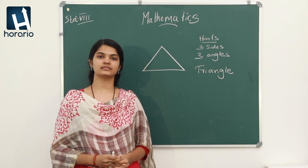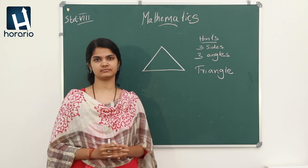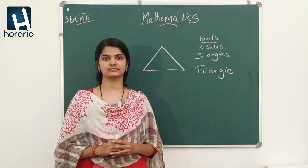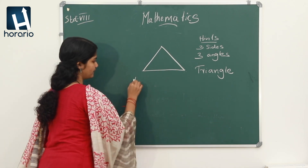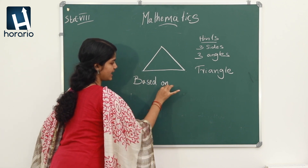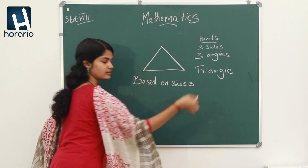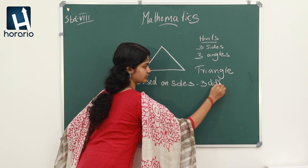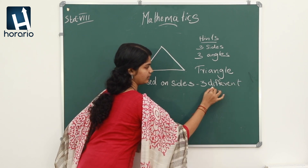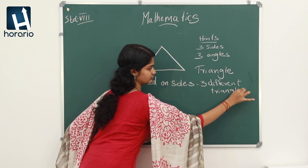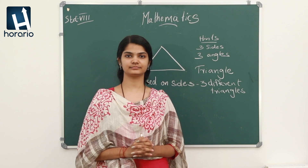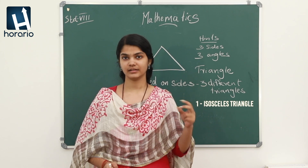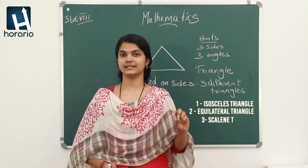So, this triangle is different based on sides. What are the different types of triangles based on sides? There are three different triangles. They are: one is isosceles triangle, second is equilateral triangle, and third is scalene triangle.